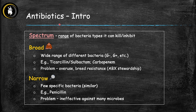The next term to define is spectrum. The spectrum of action of an antibiotic is basically the range of different bacterial types it can either kill or inhibit — how many different types of bacteria can this antibiotic kill? Broad spectrum antibiotics, which in the ER we jokingly call 'gorilacillin' because they're very powerful, can kill a wide range of different bacteria — not only gram negatives, but also gram positives and anaerobes.